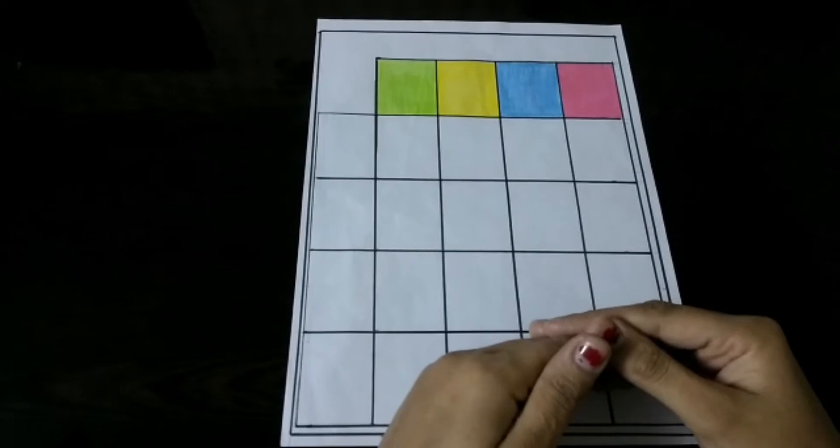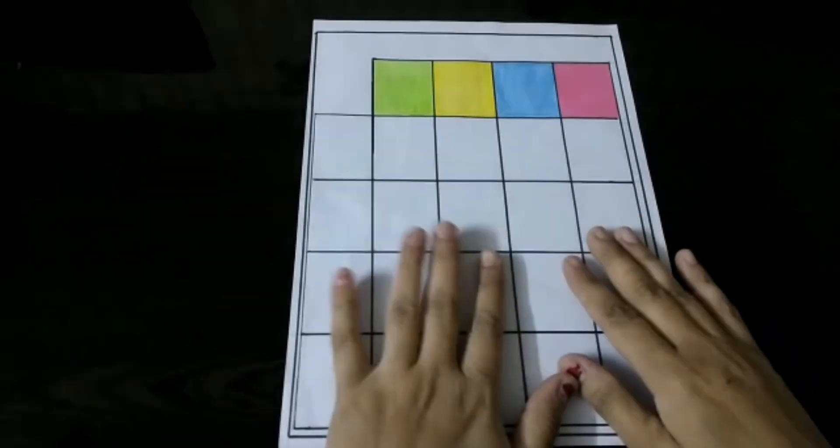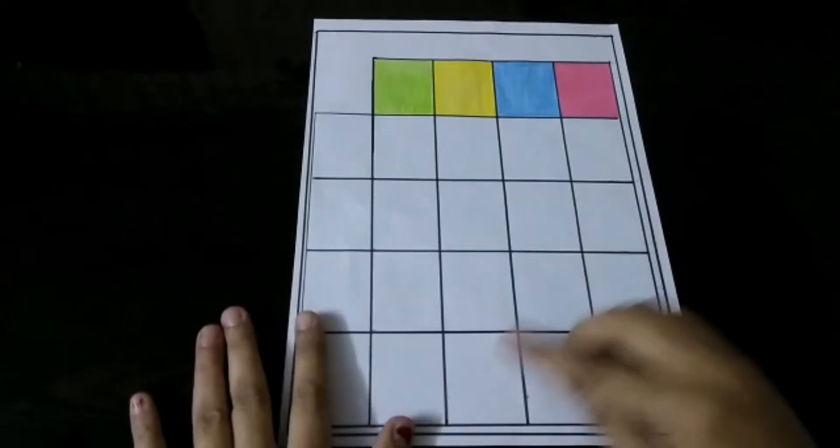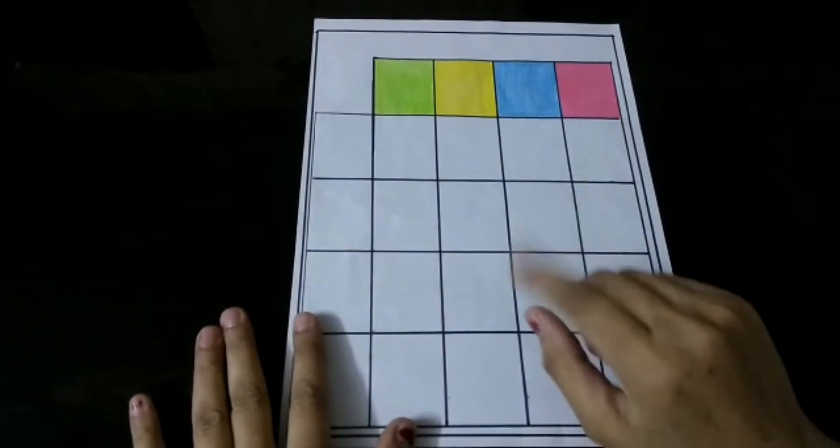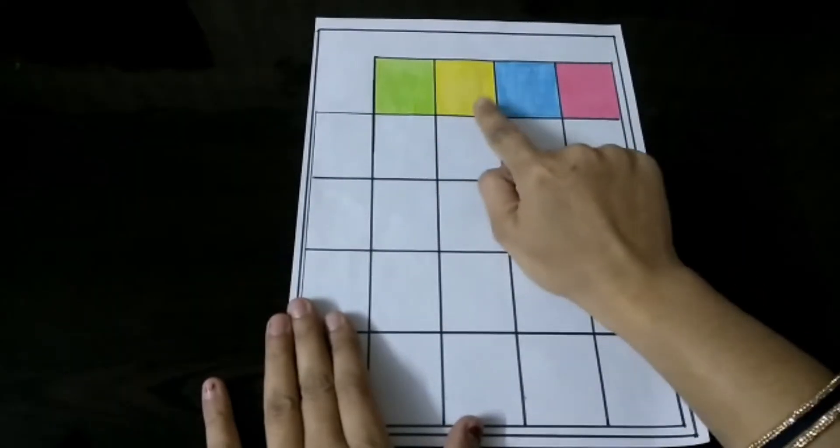You can go there and check that out. For this activity, as you could see, I have made some boxes here and I have colored the four boxes green, yellow, blue, and pink.